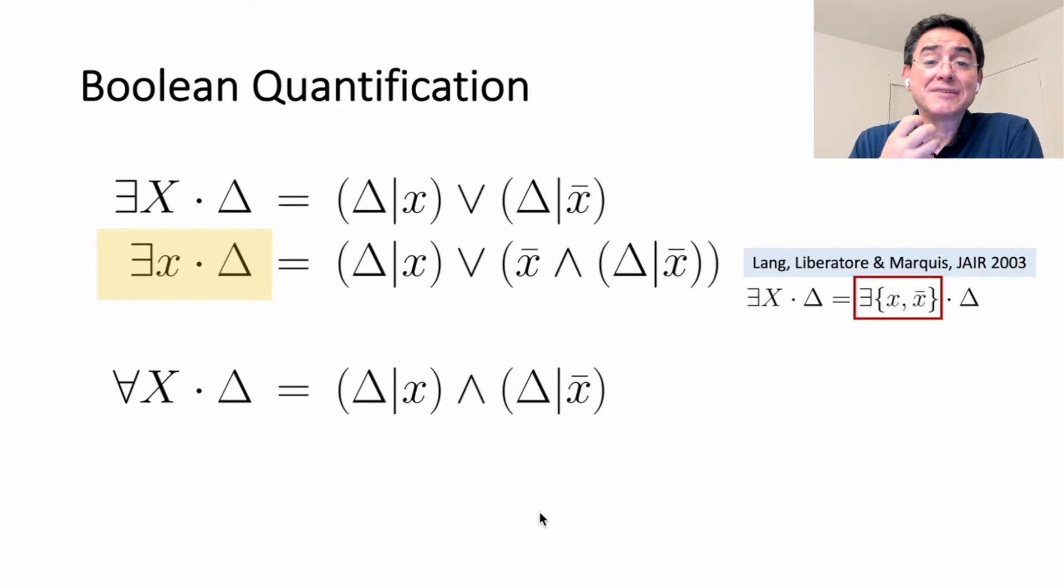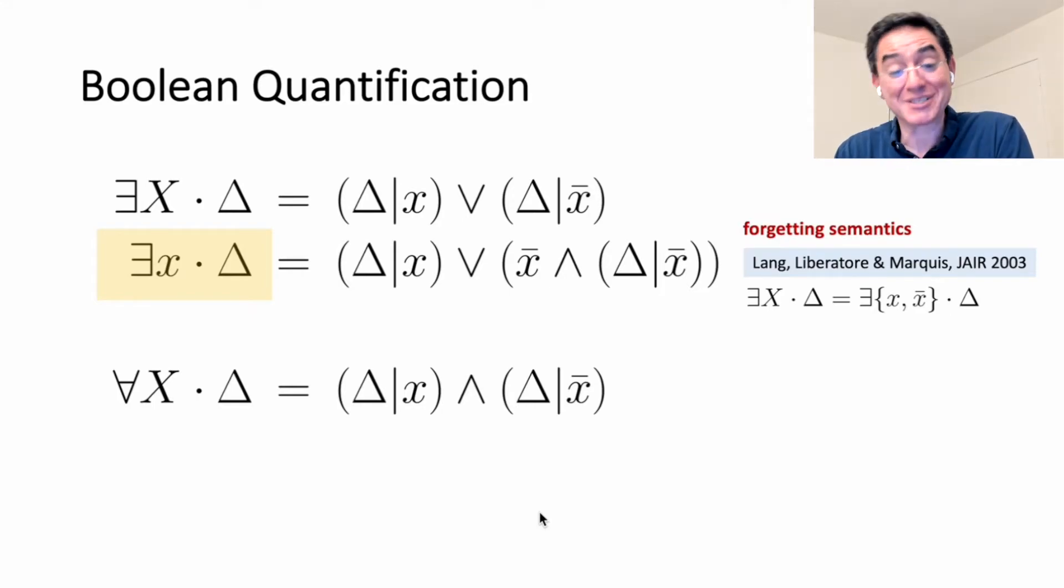Existential quantification receives significant attention in AI, and the reason is its forgetting semantics. What that means is when you existentially quantify a variable from a formula, this amounts to erasing the information that the formula has about the value. Similarly, when you quantify a literal from a formula, you are erasing the information that the formula has about the literal. So that has all kind of applications. Universal quantification does not receive as much attention. It does not have as sharp, intuitive, and usable semantics.